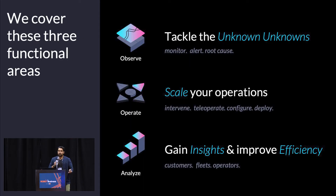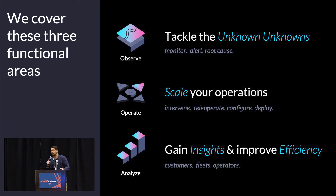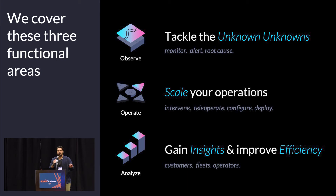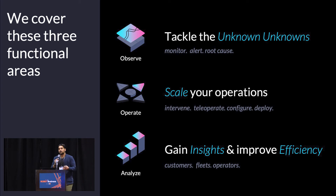We think about this in three different ways. First is observability — tackling the unknown unknowns. A known known is something like an if-check in your code where you catch an exception and generate an alert. It's a lot more difficult when your robot drives into a corner and you have no idea why. You need the context of all of the data around it to understand the problem and derive insights.